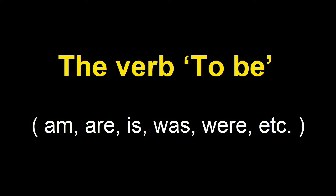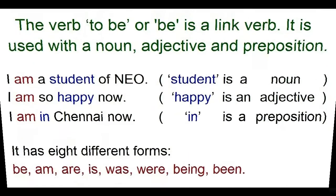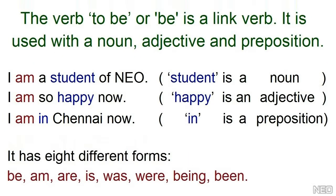Be is used a lot in English. The verb to be is a link verb. It is used with a noun, adjective, and preposition.